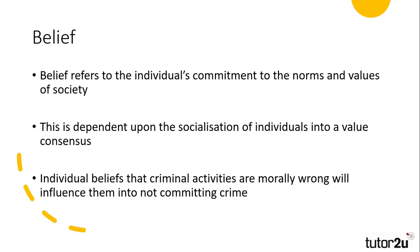A second factor is belief, and this refers to the individual's belief in the norms and values of society — the extent to which they agree with what society values and how society suggests they should act. This is dependent upon the strength of an individual's socialisation into a value consensus, and it offers an explanation for why theorists of the new right suggest that inadequate socialisation leads to the development of a deviant underclass.